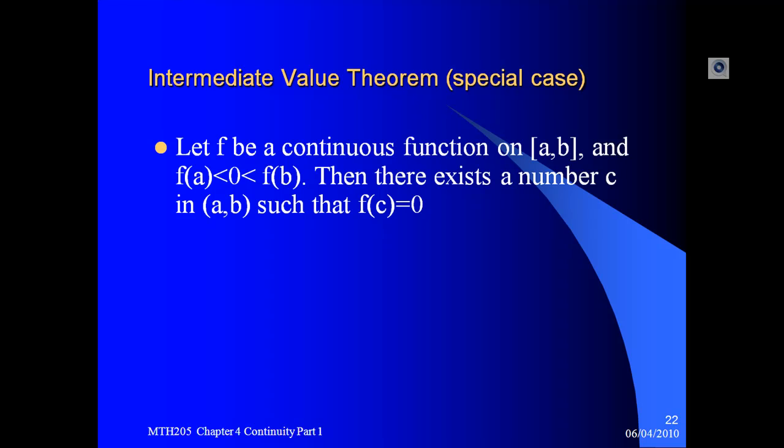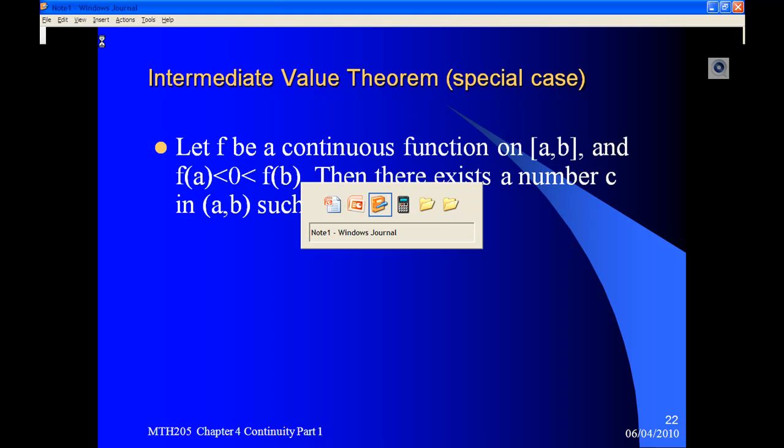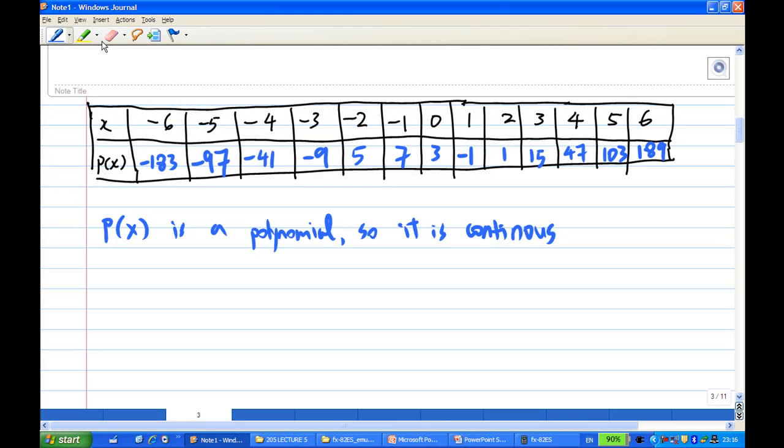So, all we need now is to look for A and B where they have opposite sign. Let's go back to our table.